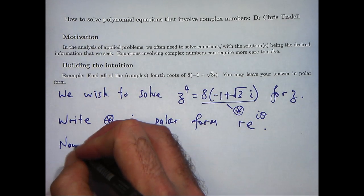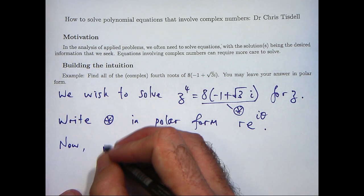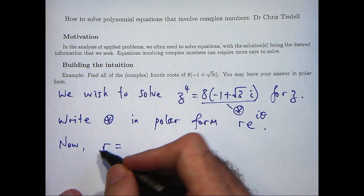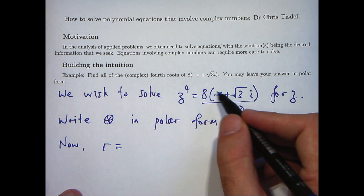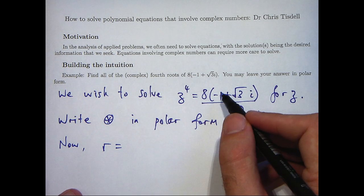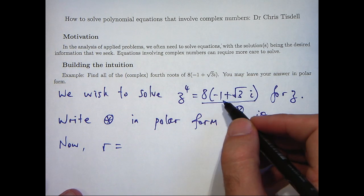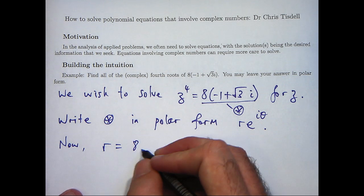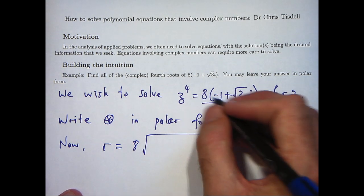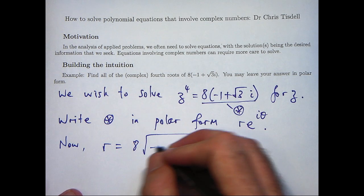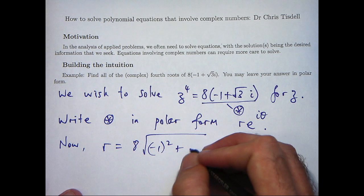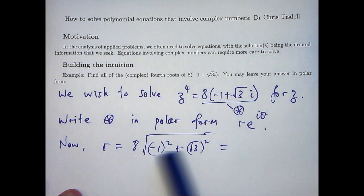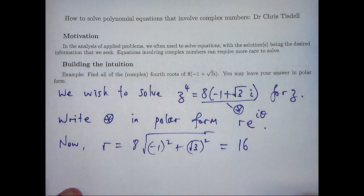We can easily do that. Now the 8 here doesn't change anything. Usually to find the r you square the coefficient of each component, add them together and take the square root. I'm just going to leave the 8 out there for simplicity. So simplifying here we'll get 16.